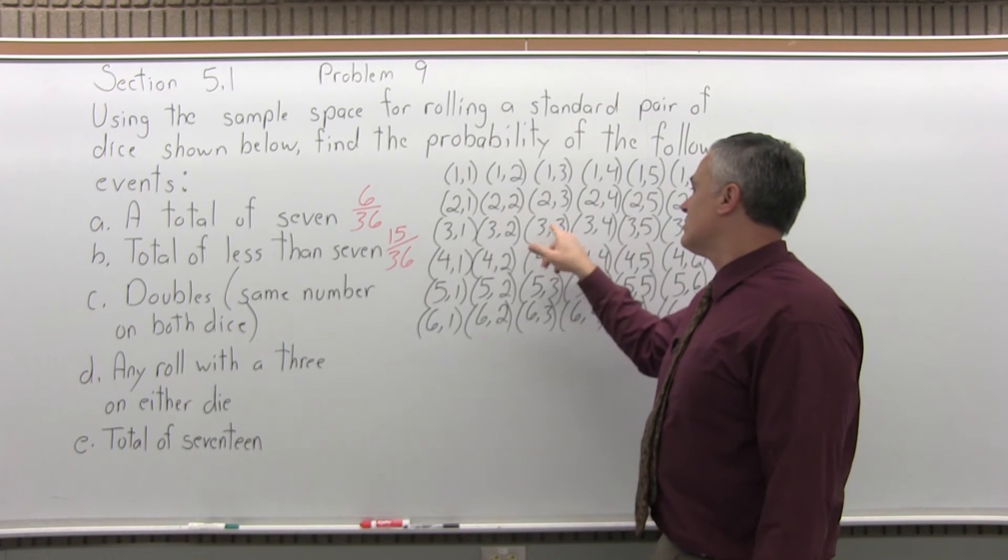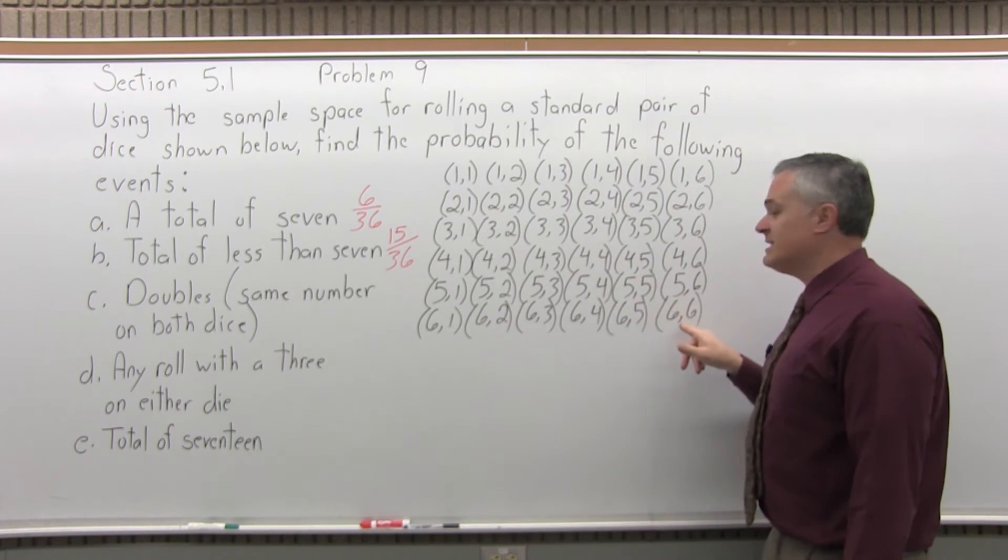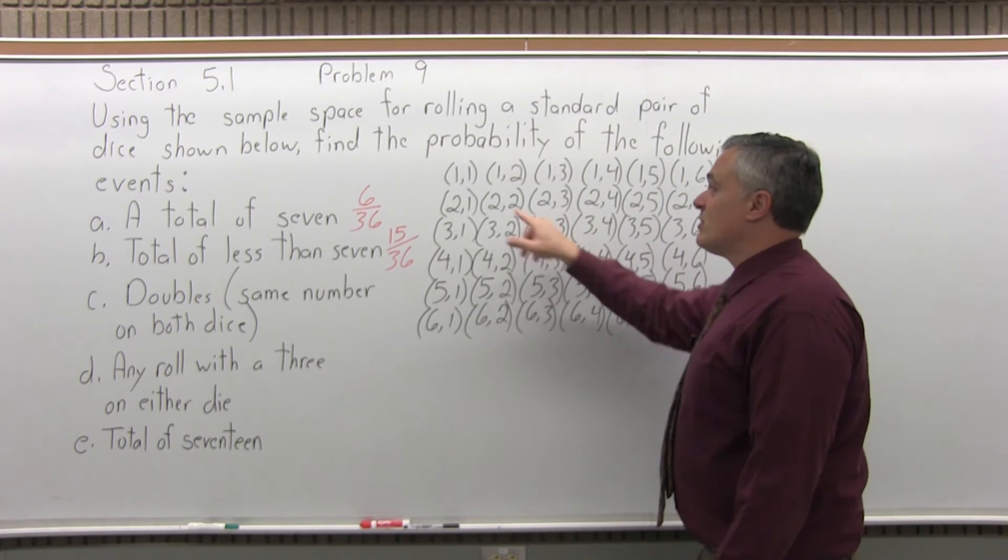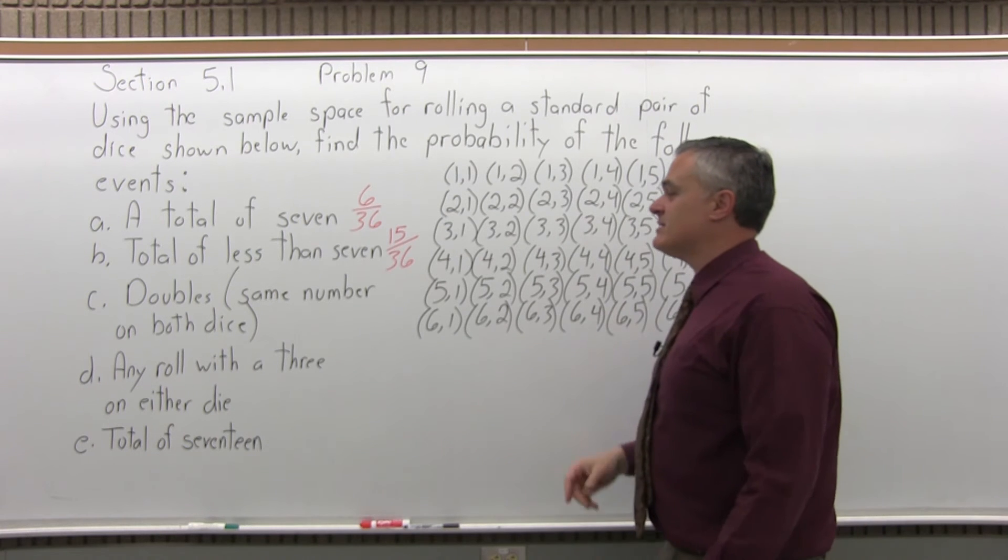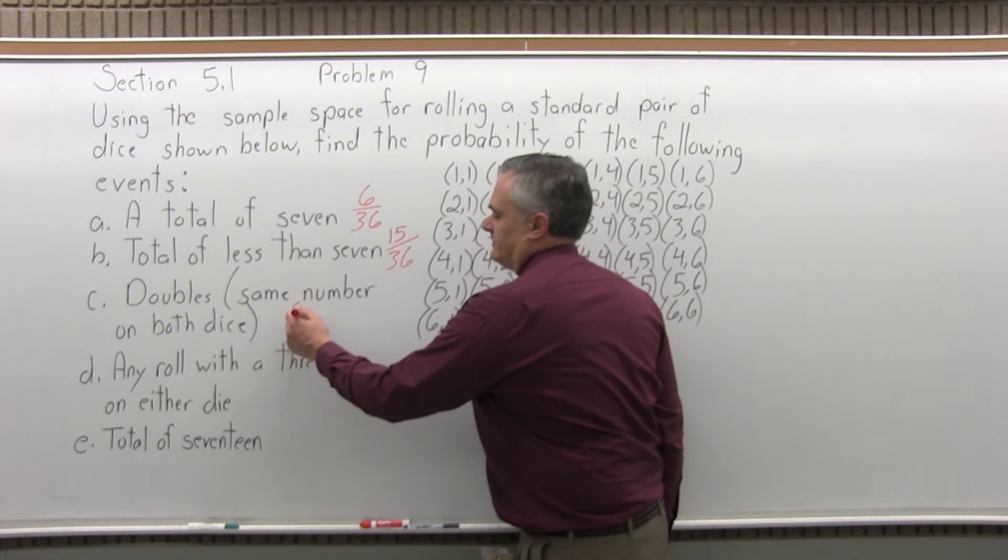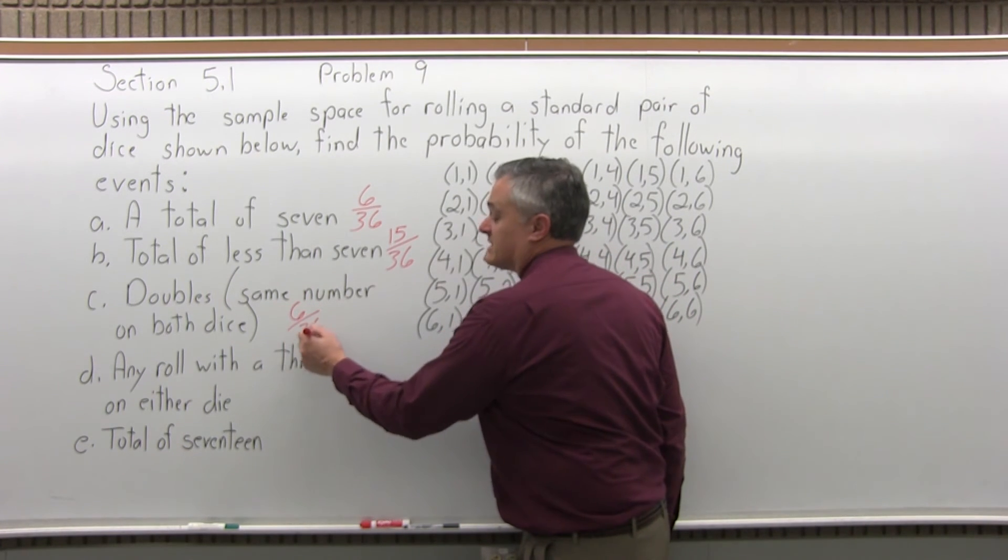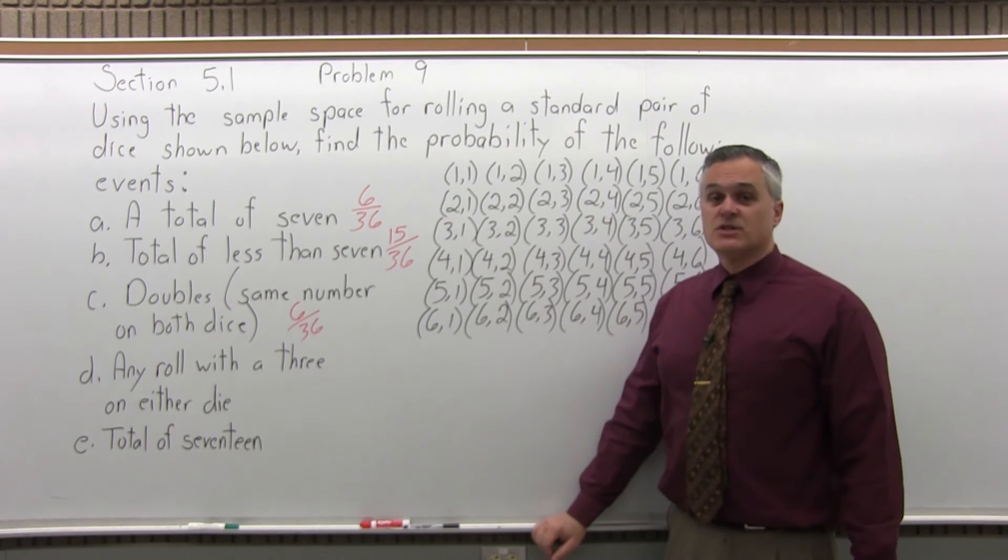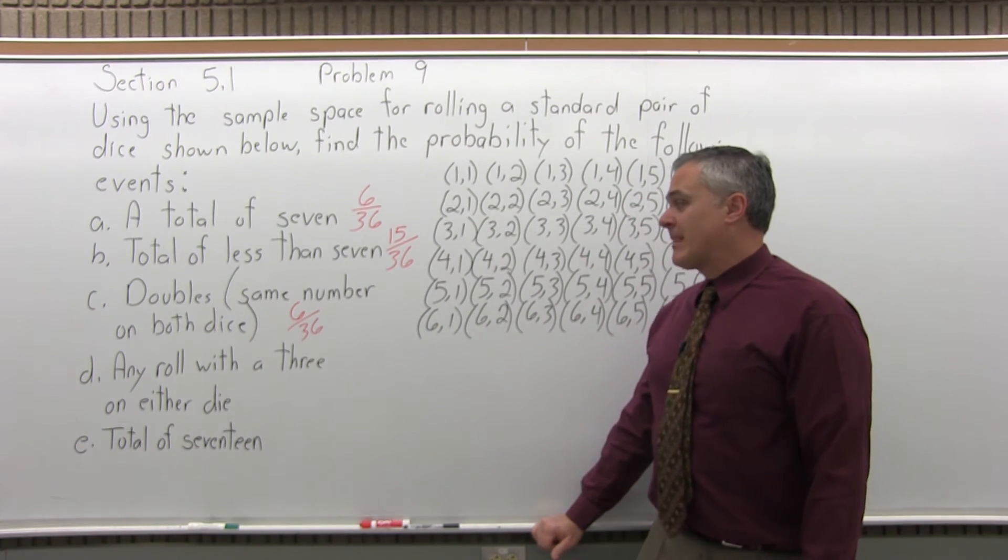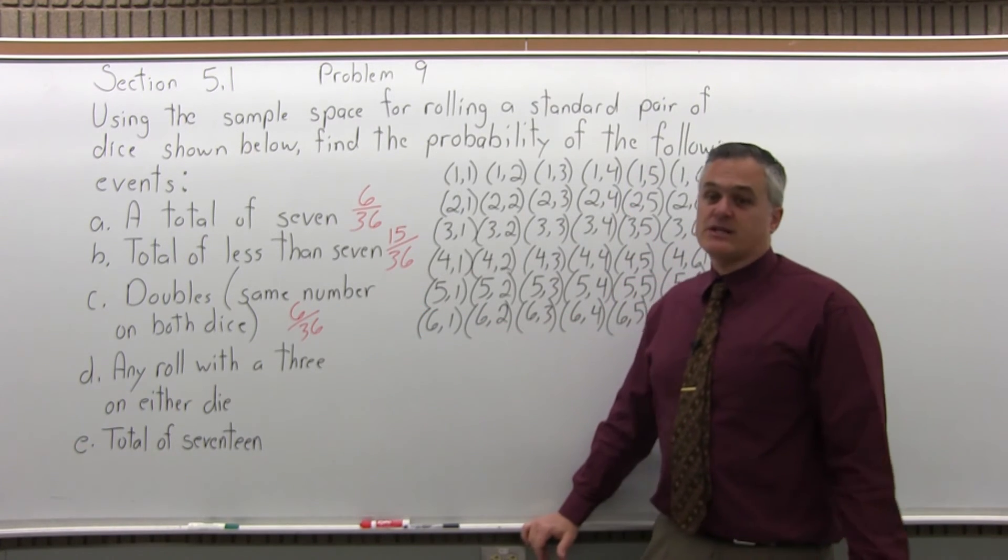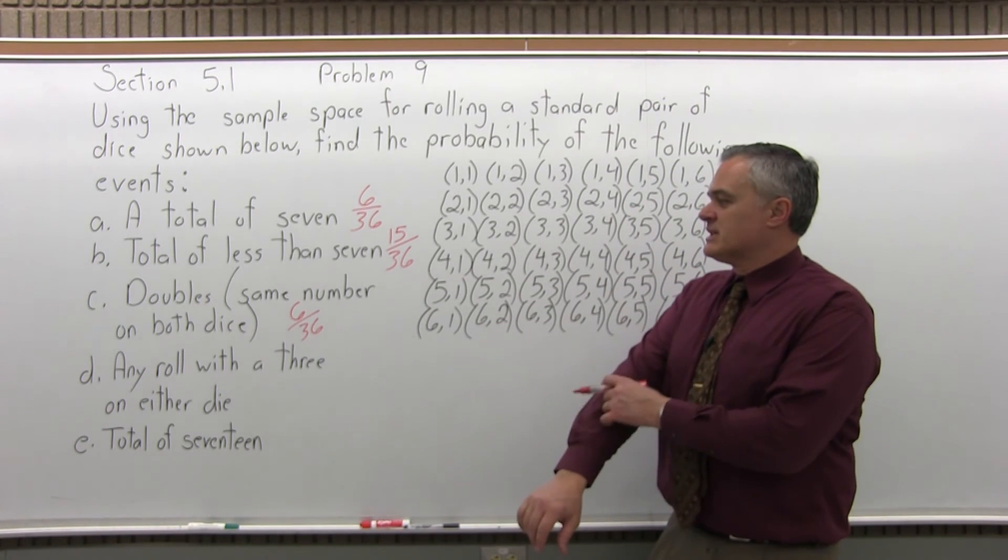1,1, 2,2, 3,3, 4,4, 5,5, 6,6. There are 6 rolls, these 6, that are considered doubles. So there are 6 out of 36 different things you can roll all together. So that's the probability of getting doubles when you roll a pair of dice. If you reduce it, it would be 1 out of 6. 1 out of 6 rolls long term you can expect to give you doubles.